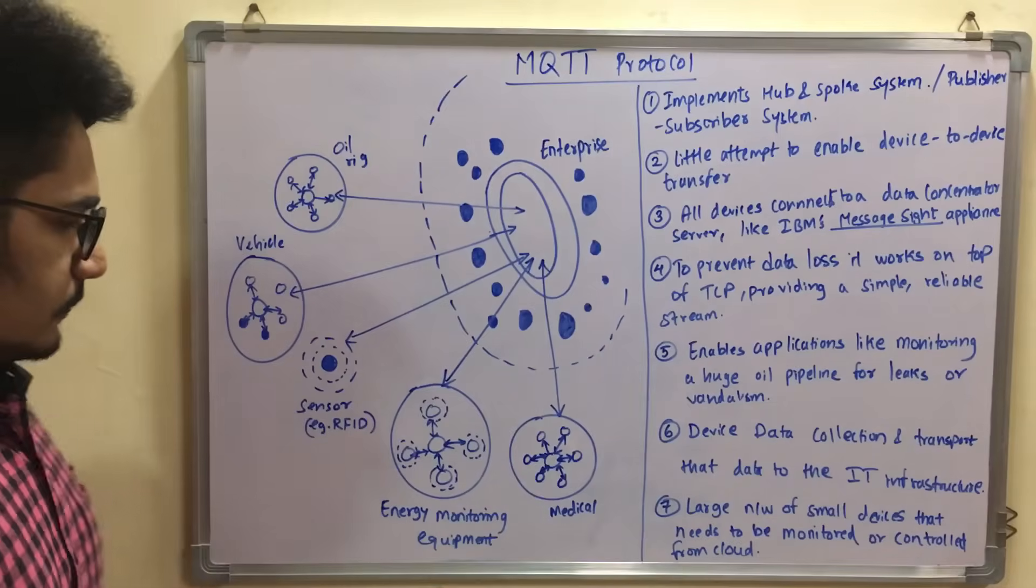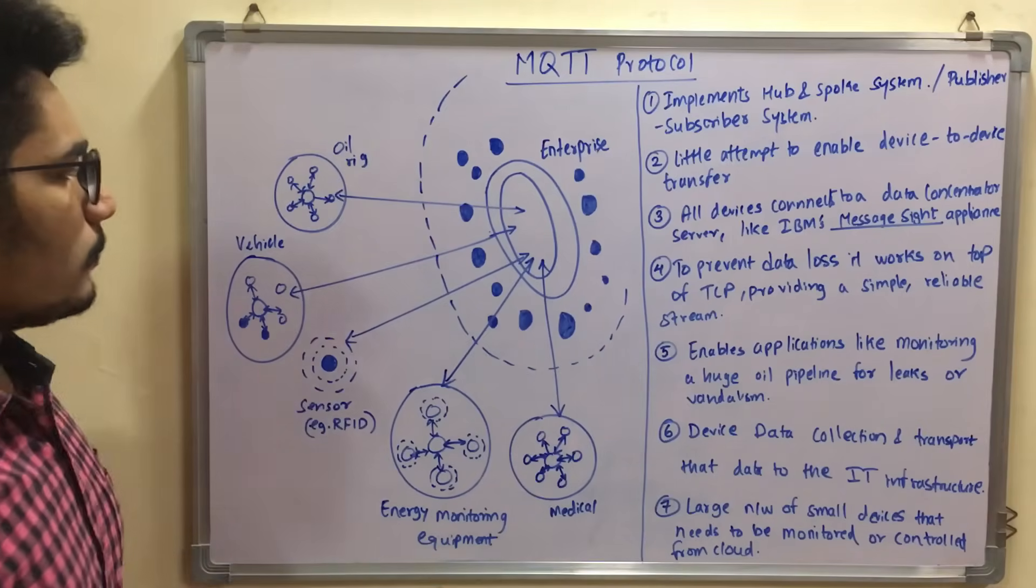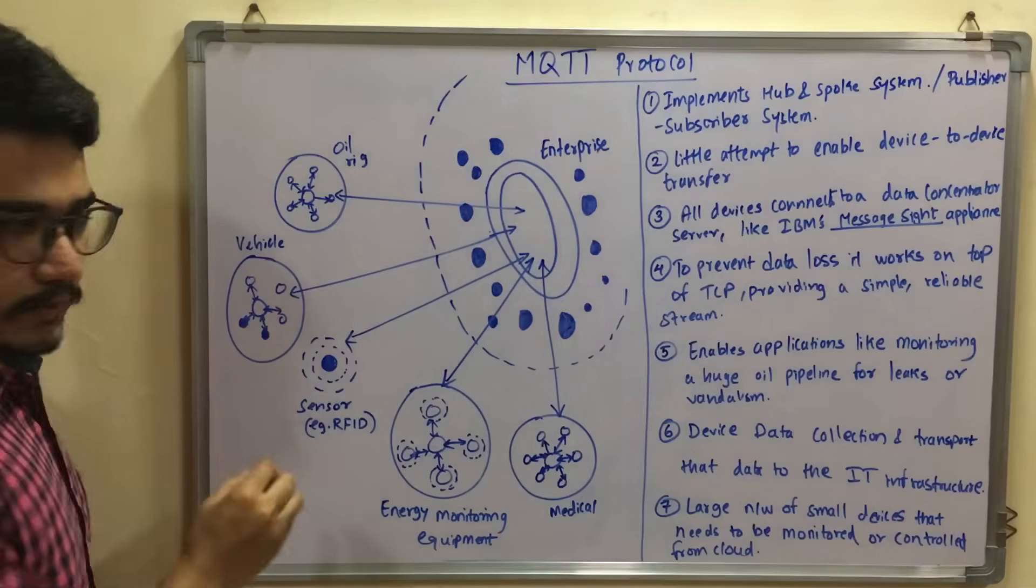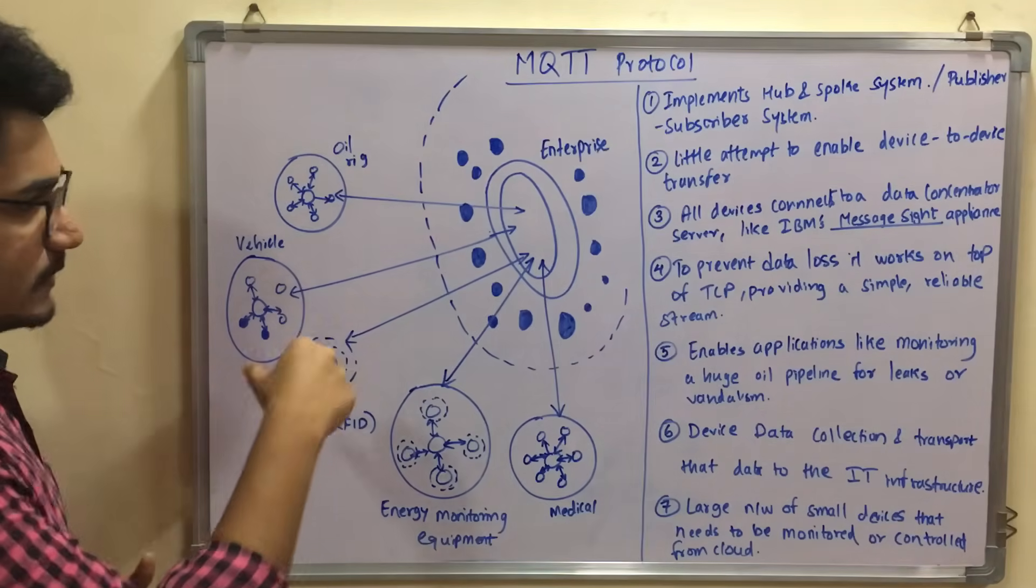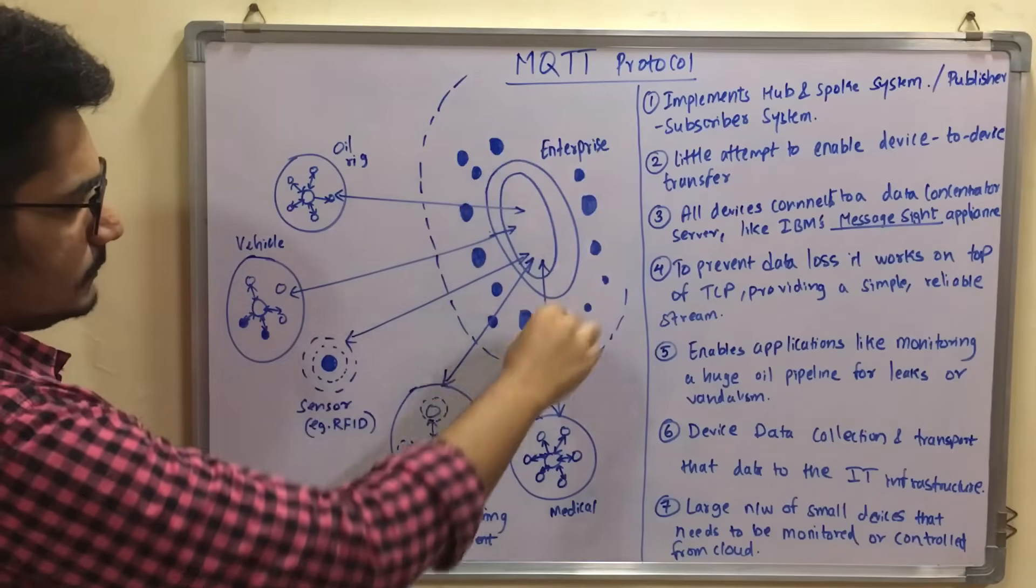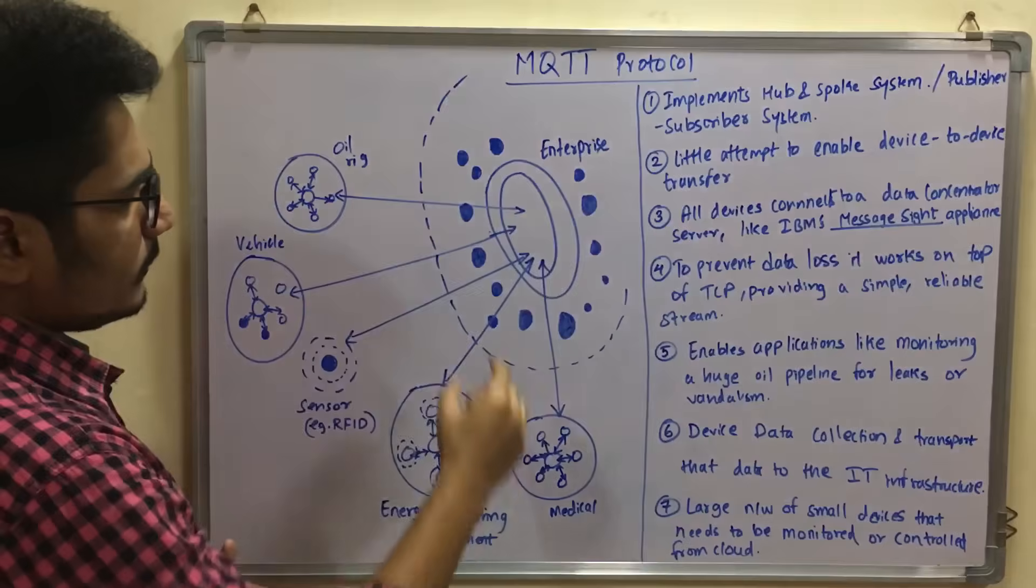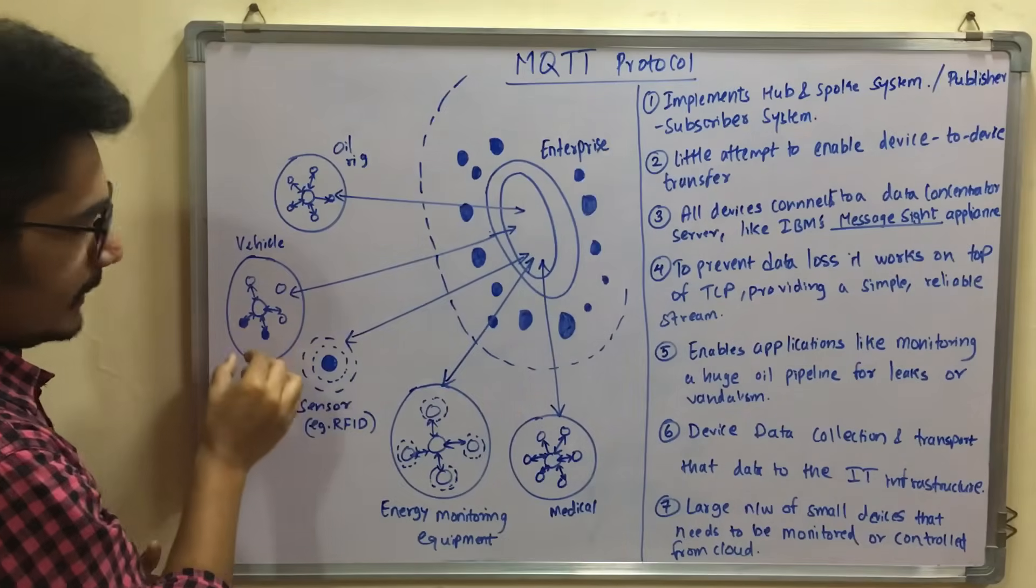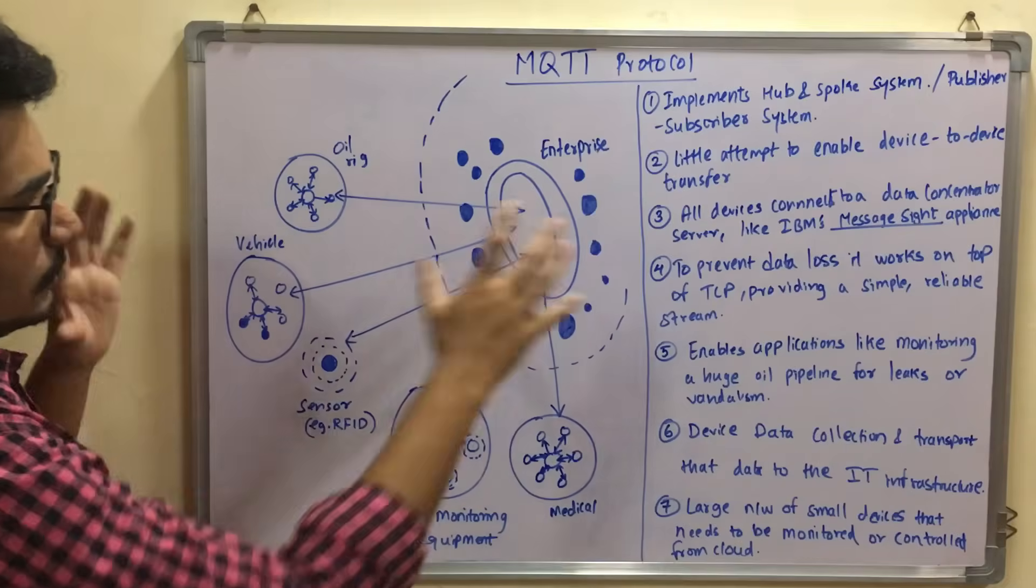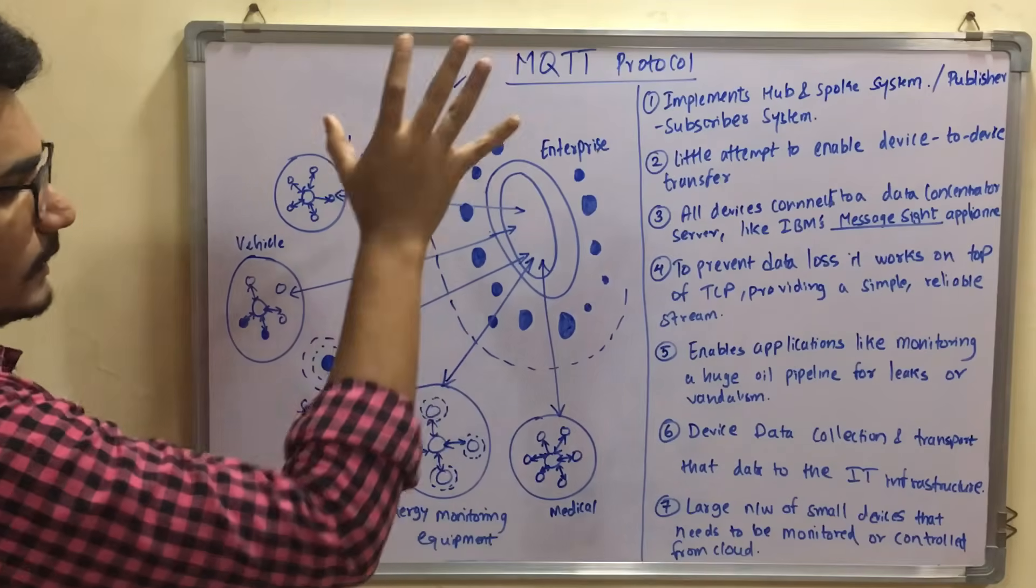What MQTT protocol does is which all services or which all entities have subscribed to this particular enterprise, they are being stored at these places. So these blue spots represent which all these entities or attributes have been subscribed to that particular enterprise. So this basically works like a subscriber and publisher network.